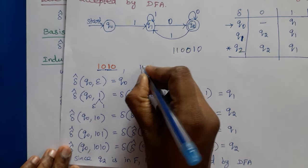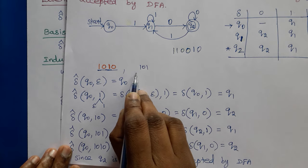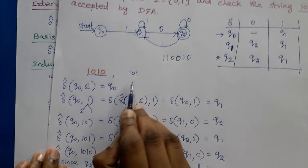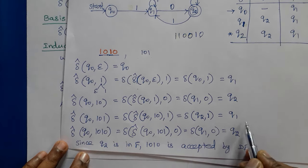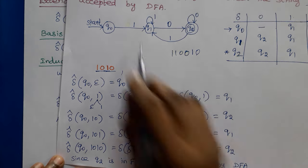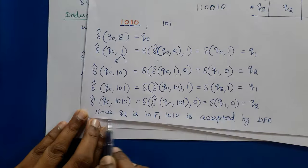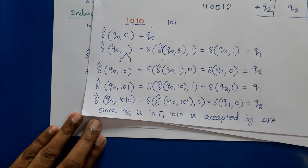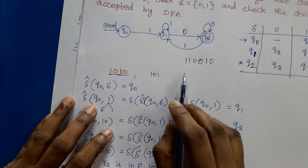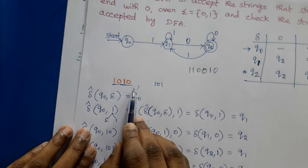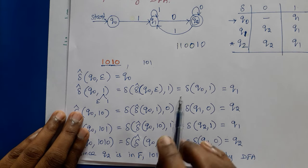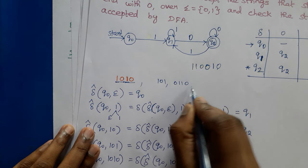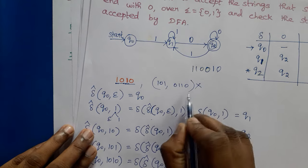Suppose instead of 1010, the string 10101 is given. This string starts with 1 but does not end with 0, so it should be rejected. Following the same steps, the output would be Q1. Since Q1 is not a final state, 10101 is not accepted by our DFA. Any string starting with 1 and ending with 0 will reach Q2; otherwise it will be rejected.